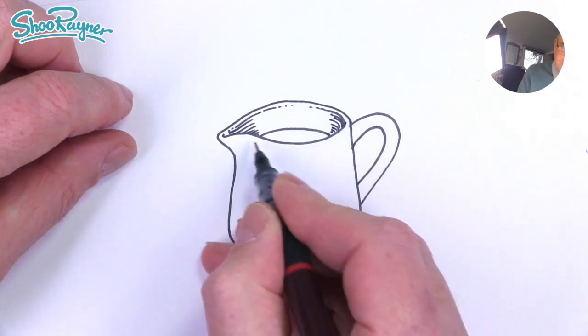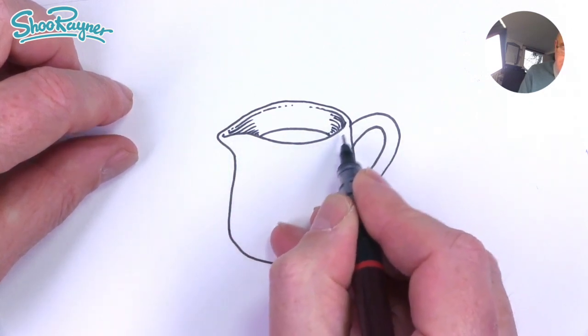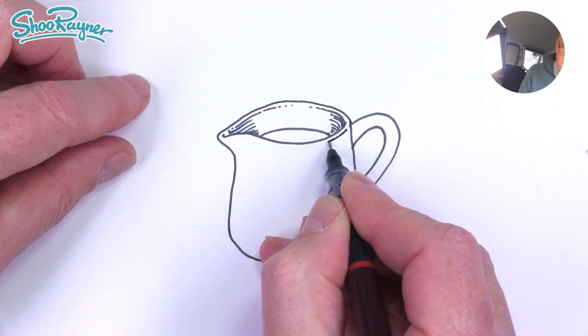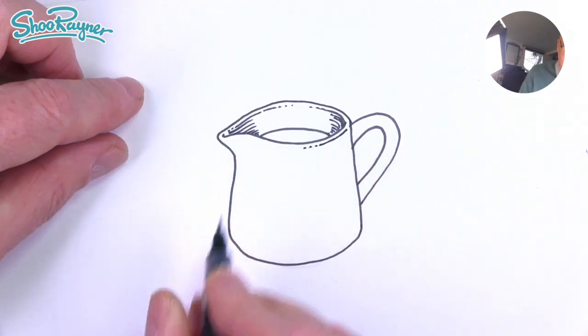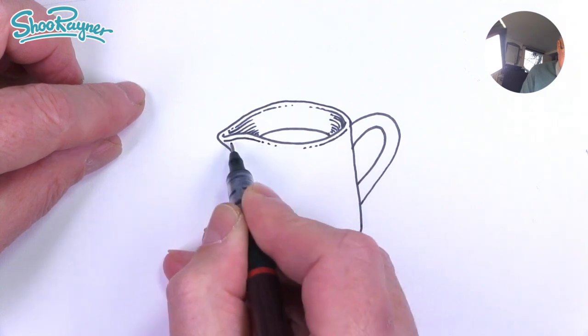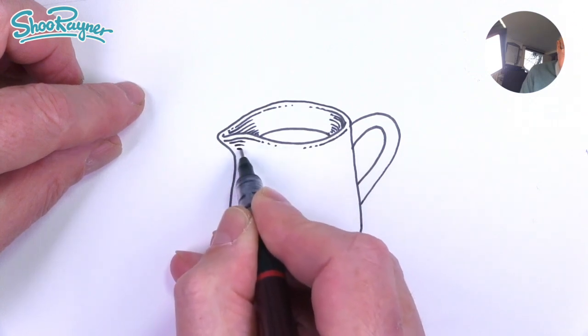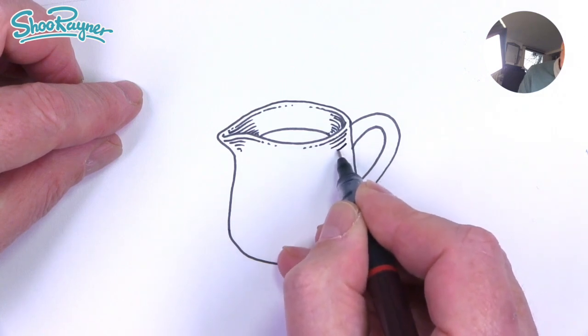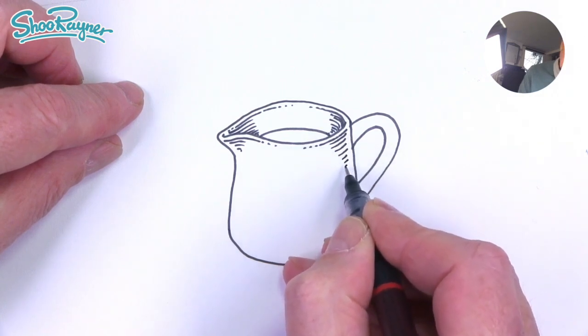We also want to kind of show that there is a thickness on this edge here as well. So start a little bit away from it and start about there and then just let that dot away. And similarly, we're going to come around there and dot away there. And then little bits down there. And then we can just let these fade away.